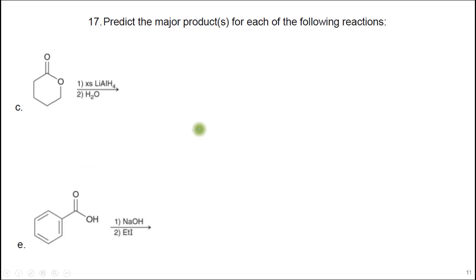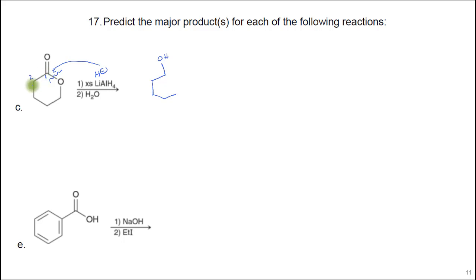Here we're predicting products. If we use excess lithium aluminum hydride — a reducing reagent, a source of H-minus — that's going to first attack right there, so this will become an alcohol. When you do that, you're cleaving this bond here. Counting carbons: one, two, three, four, five. This oxygen is the leaving group and will become the alcohol. So you'll have two alcohols.